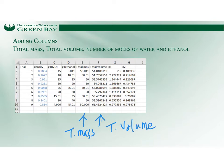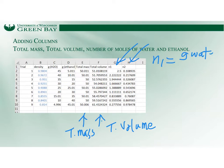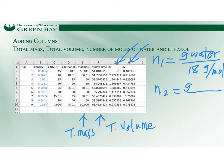We also have Columns G and H. Column G is the number of moles of water: N1 equals grams of water divided by the molar mass of water, which is 18 grams per mole. Column H is the number of moles of ethanol: grams of ethanol divided by 46 grams per mole, because the molar mass of ethanol is 46 grams per mole.